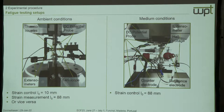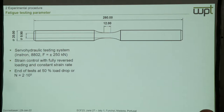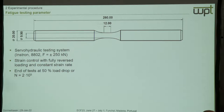At the back of the specimen there is a self-built sensor from one of the project partners making use of the Hall effect. Strain control here is done with the large extensometer. All tests were done with a servo hydraulic testing system with uniaxial load capacity of 250 kN, in strain control with fully reversed loading at a constant strain rate, because the strain rate is known to influence martensitic transformation and therefore the low-cycle fatigue behavior.